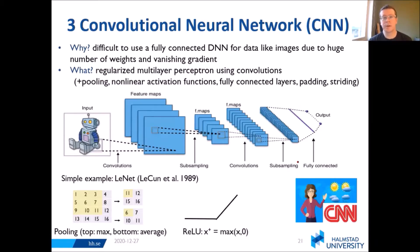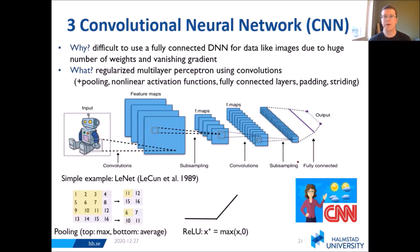Convolutional neural networks are a very common type of deep learning network. It would be difficult to use a simple fully-connected deep neural network for data like images because there are just a massive amount of weights. We also have the vanishing gradient problem, where with so many weights, during back propagation the gradient will fade out.